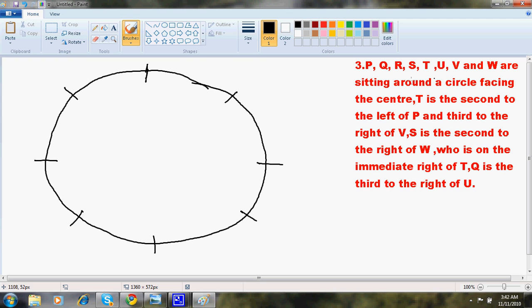P, Q, R, S, T, U, V and W are sitting around a circle facing the center. T is second to the left of P. Here I go. T. This T you place always at the bottom here.